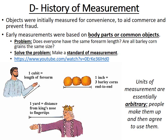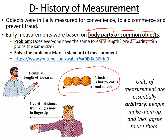Before we go into measurement conversions and calculations, let's briefly talk about the history of measurement. Measurement has been used for a very long time to help with trade and selling. One problem with measurement early on in history was that measurements were often based on body parts or common objects. For example, at one point one inch was defined as having three barleycorns end to end, and there was a unit called the cubit, which was the length of a forearm.